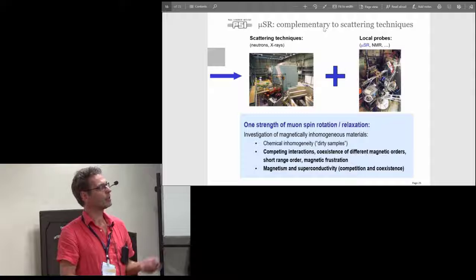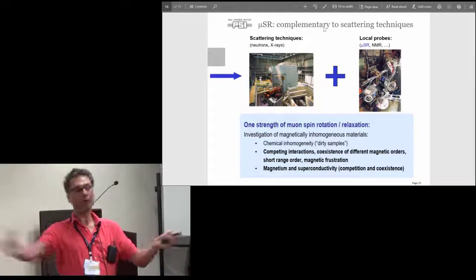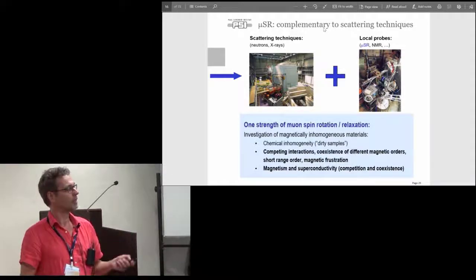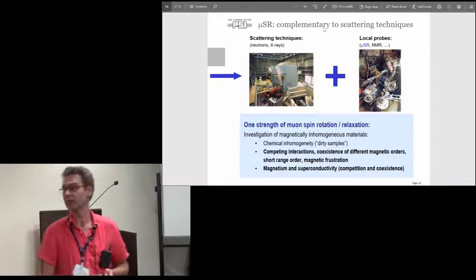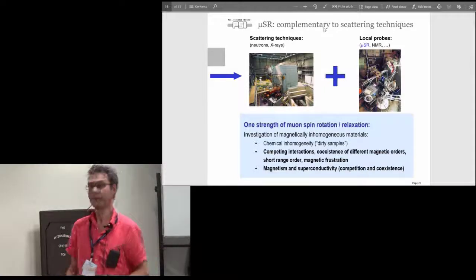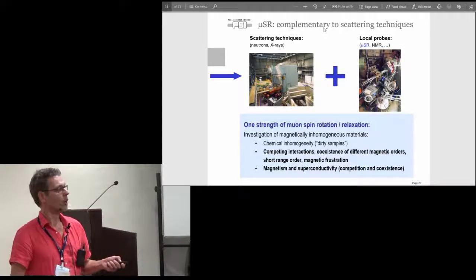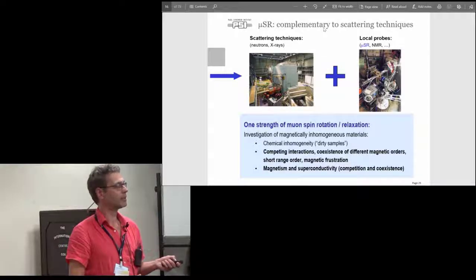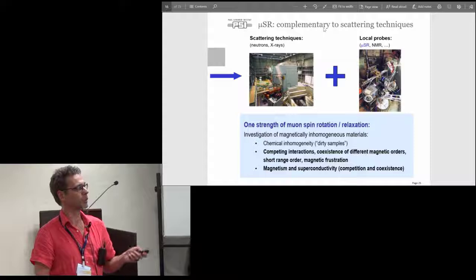To compare it with some other techniques, scattering techniques, muons is a local probe. It does not average across your sample. One of its strengths is that it's very well suited to investigate magnetically inhomogeneous samples where eventually with scattering techniques you don't see anything. Whereas with the muons you can see the competing interactions between different magnetic orders, also the coexistence between magnetism and superconductivity, which you hardly can see with scattering techniques.